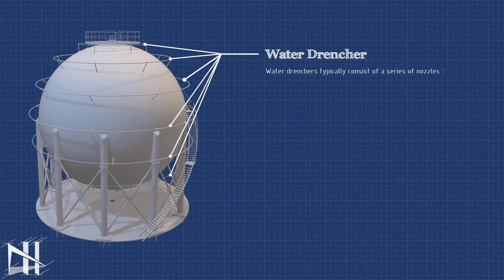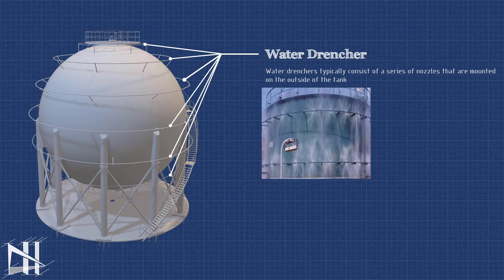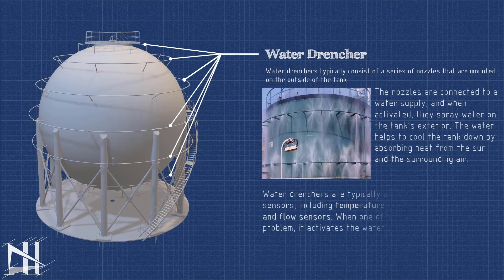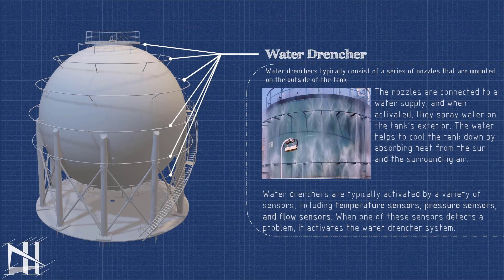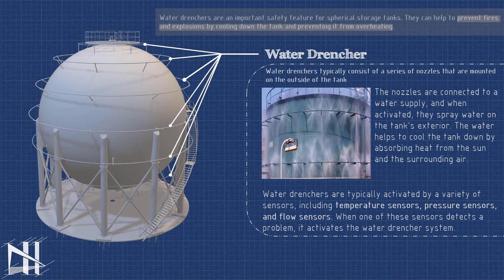Water drenchers are typically installed on the top of the tank. This allows the water to be sprayed over the entire surface of the tank. The water drenchers are also connected to a fire alarm system. If a fire is detected, the water drenchers will automatically activate.